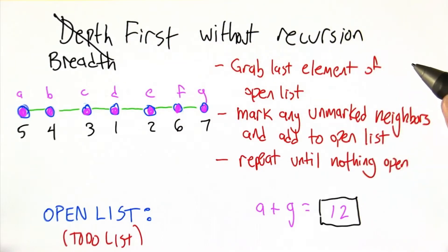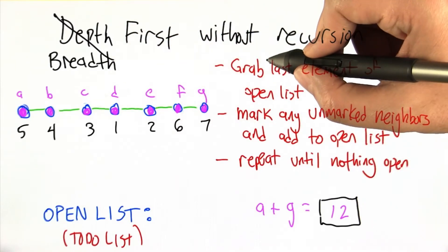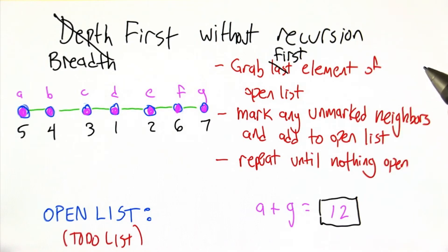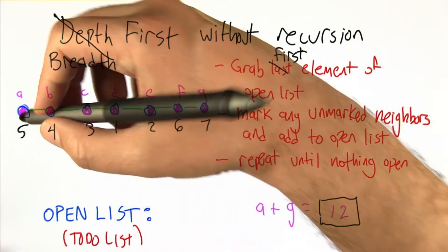We're going to change this to breadth-first search, but we're going to do it really easily, at least for the people version, by grabbing the first element off the open list instead of the last element off the open list. Let's take a look at how that changes things.